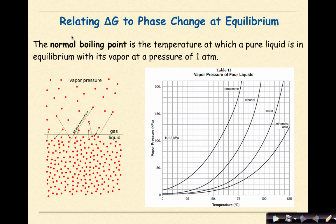So let's start off by relating delta G to phase change at equilibrium. The normal boiling point is the temperature at which a pure liquid is in equilibrium with its vapor at a pressure of 1 atmosphere. If we look at this representation over here, we can see that we have vapor pressure above and we have liquid below. The phase transition either goes from the vapor becoming a liquid or the liquid becoming a vapor. This diagram basically represents the phase change.